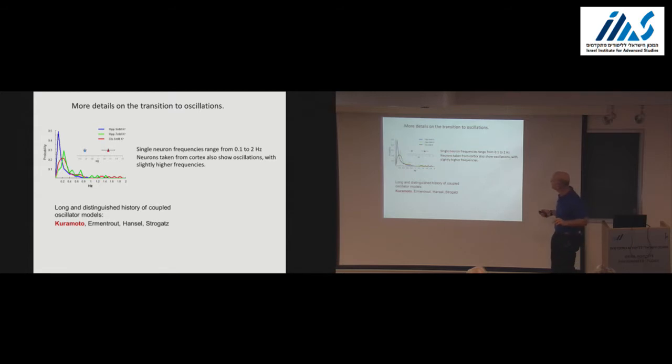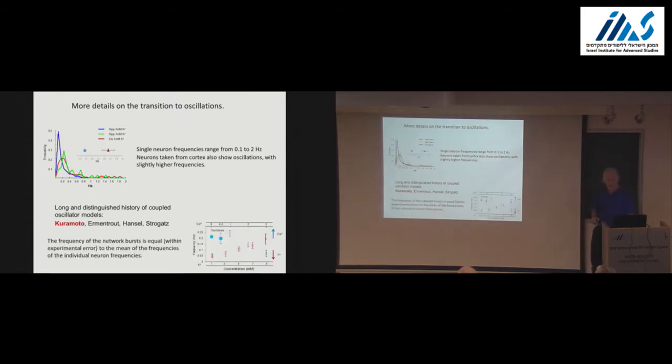Just one note about the transition. So the single neuron frequencies range from, you know, about 0.1 to maybe 2 hertz, large range, average over all of them. And you get what the frequency of the whole network will be afterwards. That's a little bit like in Kuramoto. So you're getting the average of all the available frequencies. And you see that here. So the difference between the oscillators and the result of the connection of all of them, you can see that it's very close in terms of at least our experimental resolution.